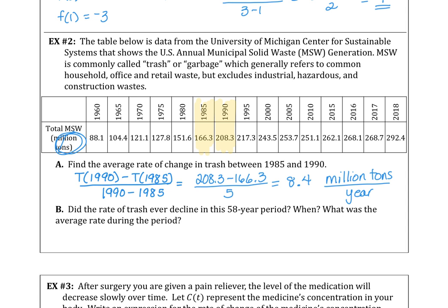In part B we want to answer the question, did the rate of trash ever decline in this 58 year period? If it did, when and what was the average rate during that period? So if we inspect the table we're looking for where our values in the total waste is declining, and it looks like right in here between 2005 and 2010.